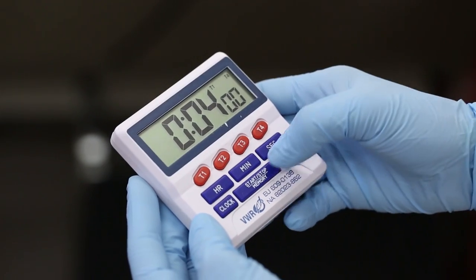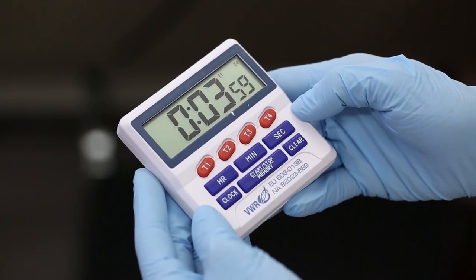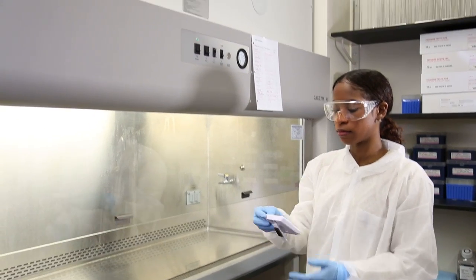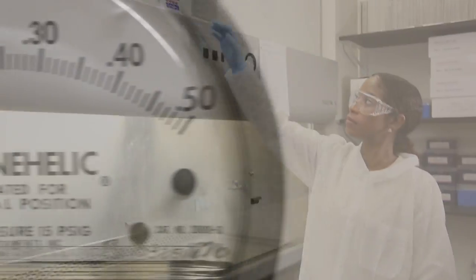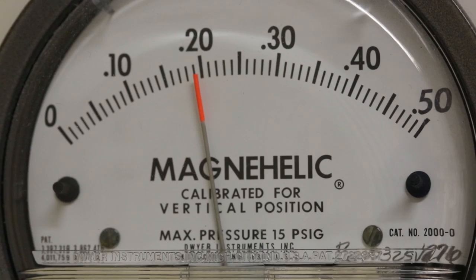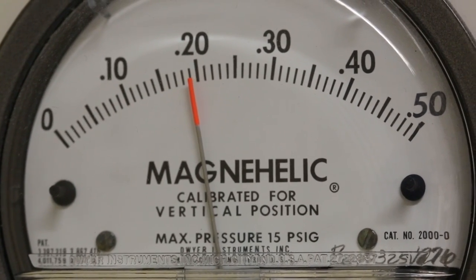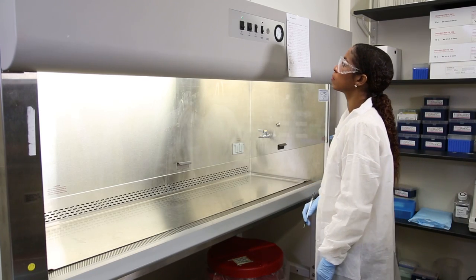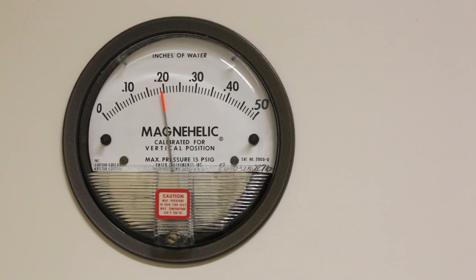Allow the cabinet to run for at least four minutes in order to purge the air of particulates inside the BSC. If the BSC has a pressure differential gauge, also called a magna-helic gauge, this needs to be checked and recorded.